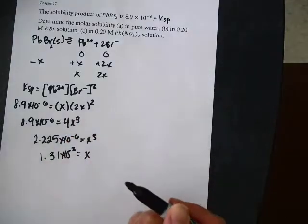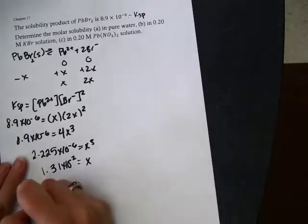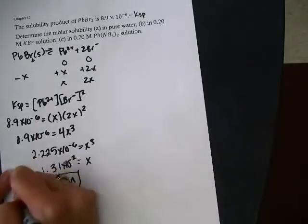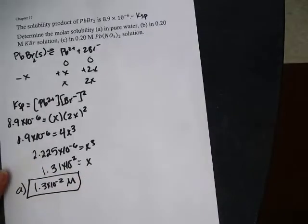Now I just need to take the cube root. Remember, that's the molarity. That's how much will dissolve. That is the molar solubility, that X. So 1.3 times 10 to the minus 2 molar is the molar solubility in water.